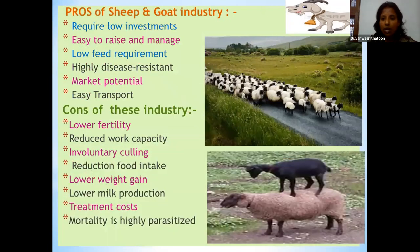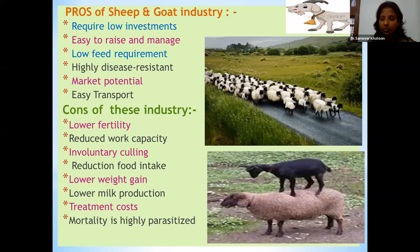A coin always has two sides. This sheep and goat industry is no doubt beneficial to small and marginal farmers in one way, but there are certain cons also. Coming to the pros: they are easy to raise and manage, require very low investment, have low feed requirements, can graze anywhere in natural habitat, are highly disease resistant, easy to transport, and have good market potentiality.